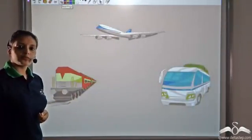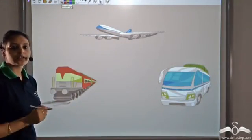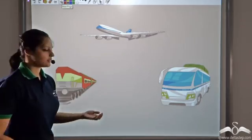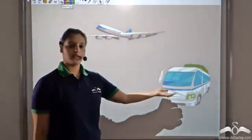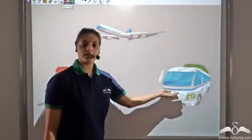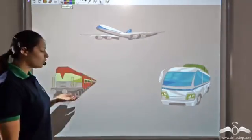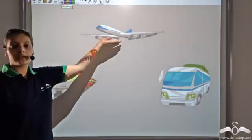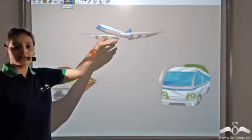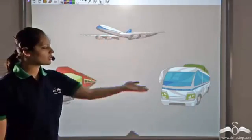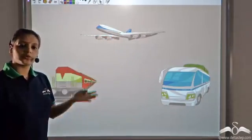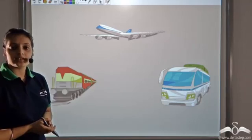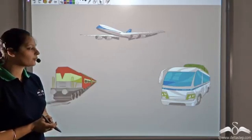The next problem was how do they go? They had three options: they could either take a bus, a train, or a plane. Which of these three options should they take?